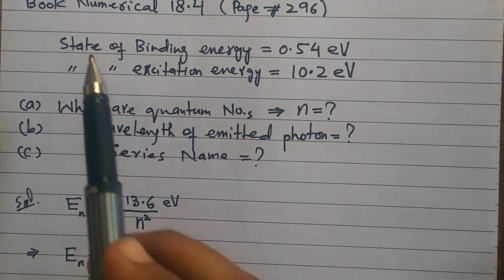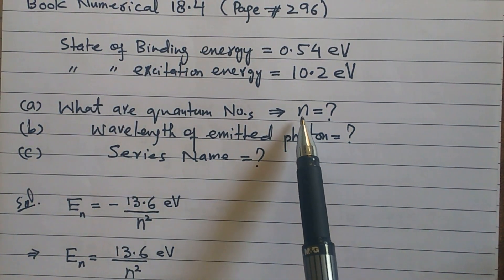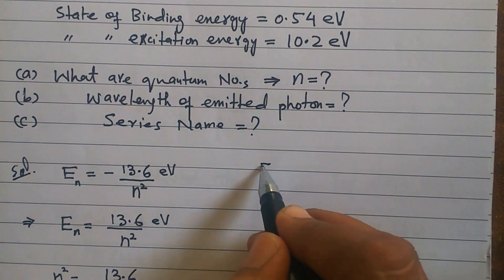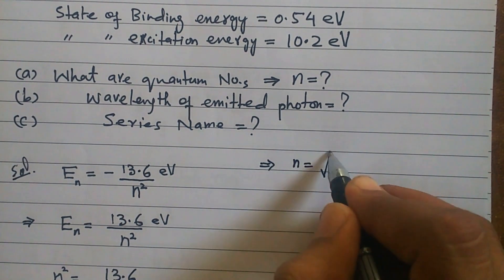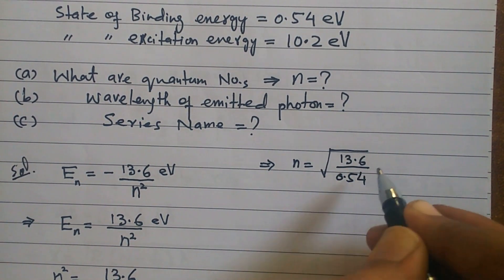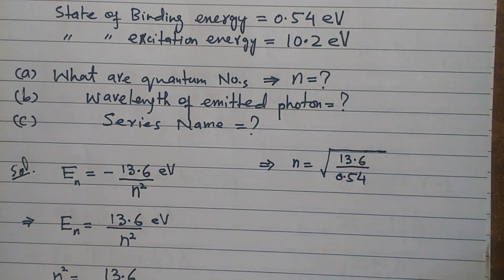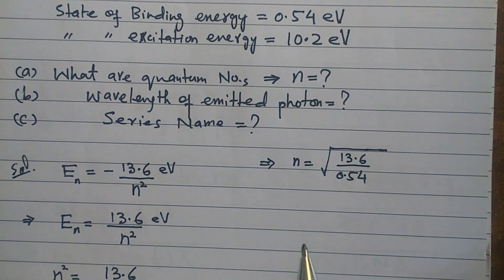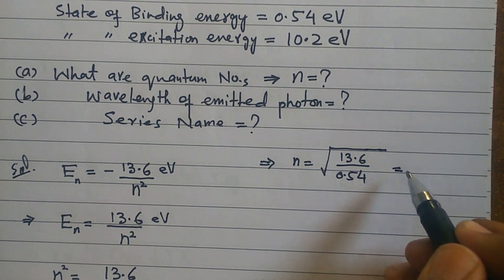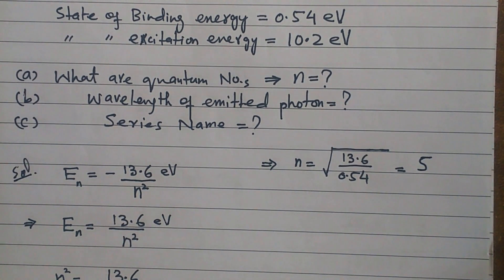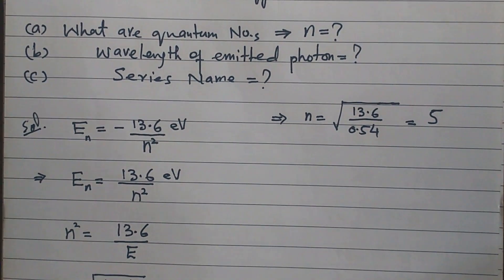Now we can do the first part of the numerical easily. We need to find the state — that means finding the quantum number n. The energy given is 0.54 eV, which is a binding energy, so we put it into the formula: n = √(13.6 / 0.54). No unit conversion is needed since both values are in electron volts. The answer we get is n = 5.